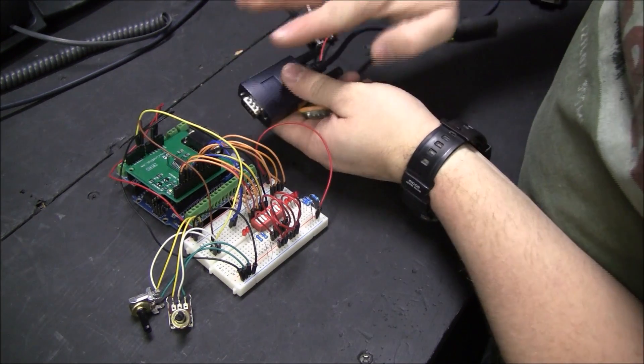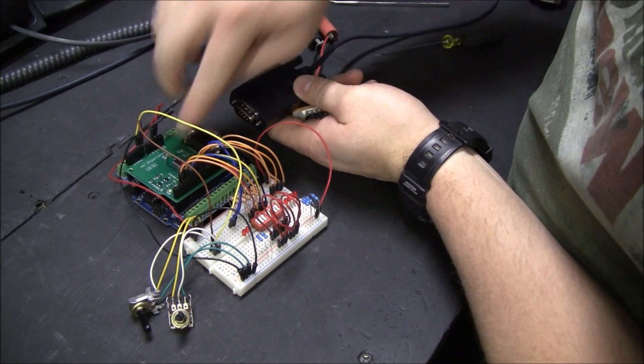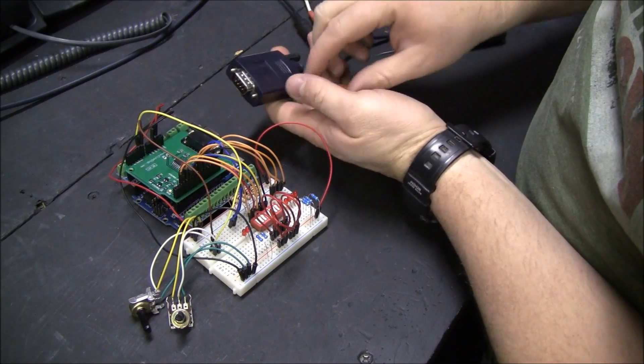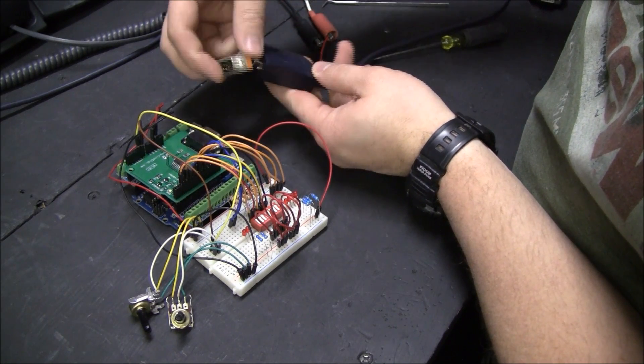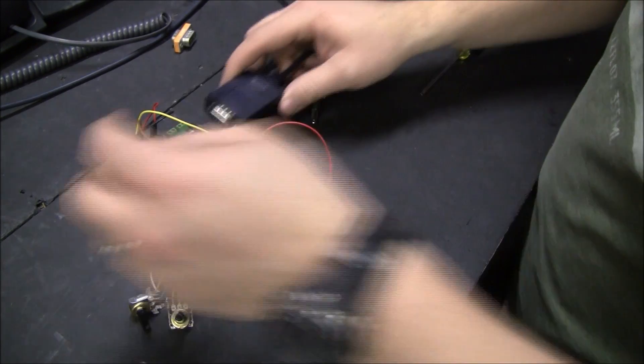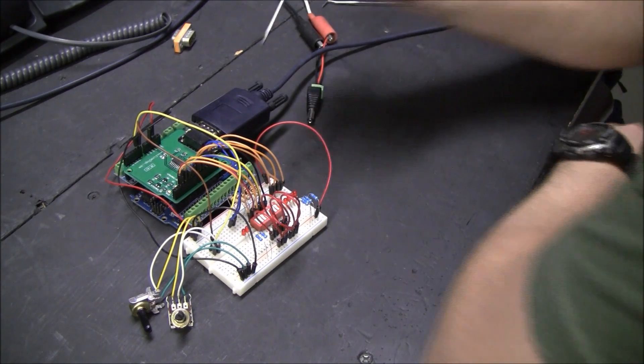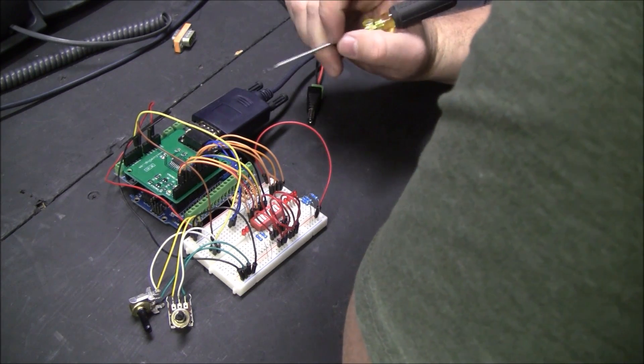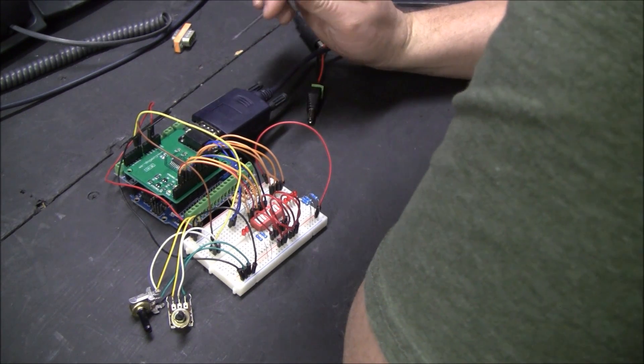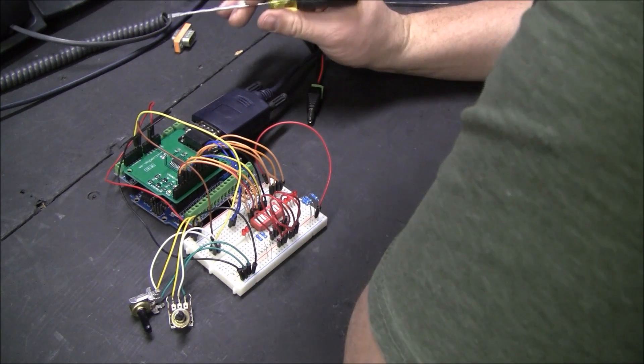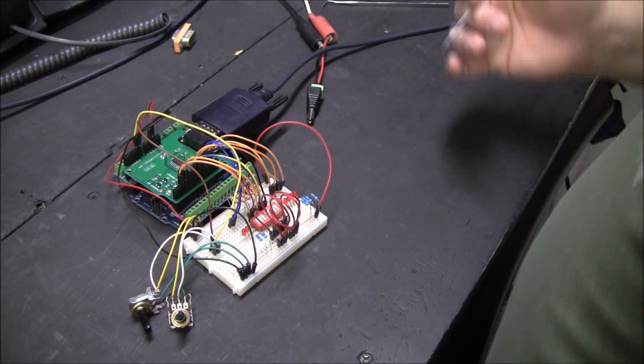You plug it in. Since you have transmit and receive, transmit from here has to go to receive here. So sometimes you need to cross it over with like a null modem adapter. So you could just stick that in there and it'll cross the pins over. This actually works. RS485 is a lot more finicky and you can spend a lot of time trying to get the drops to work out. And you might need to have pull down or pull up resistors on the end of your run.